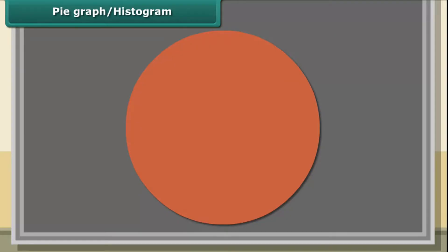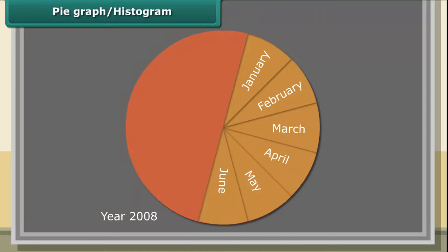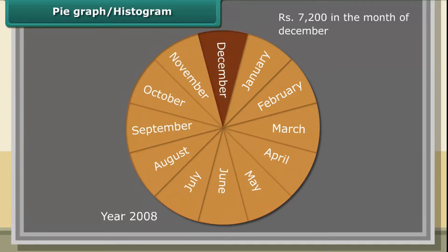Pie Graph or a Circle Graph. Pie Graph is used to compare parts of a whole. The circle represents the whole in a pie graph. In the month of December 2008, Ramu spends his monthly salary amounting to Rs. 7,200 on different items.